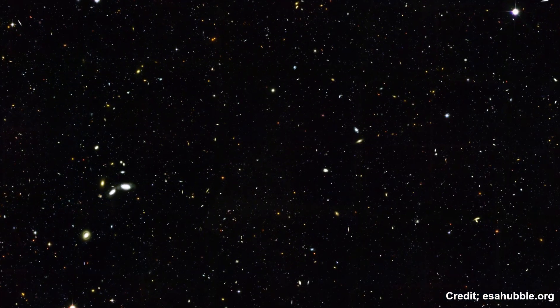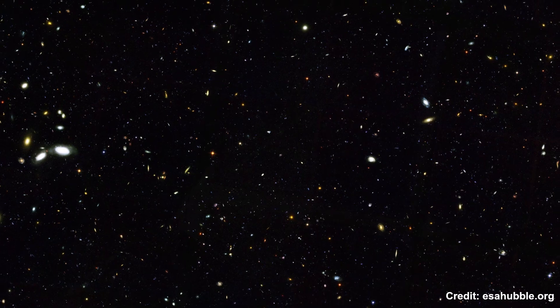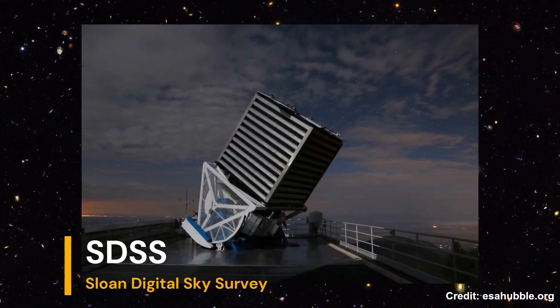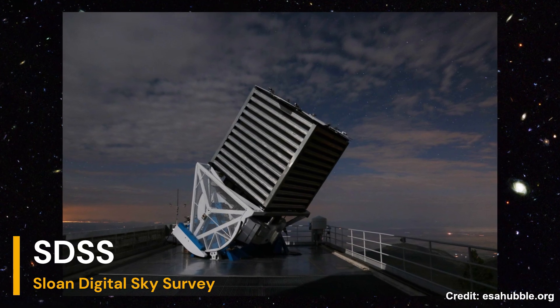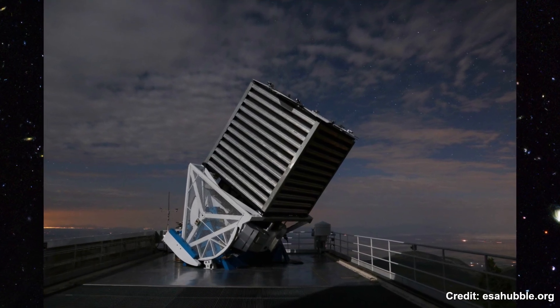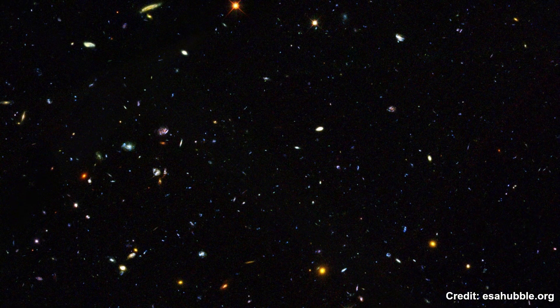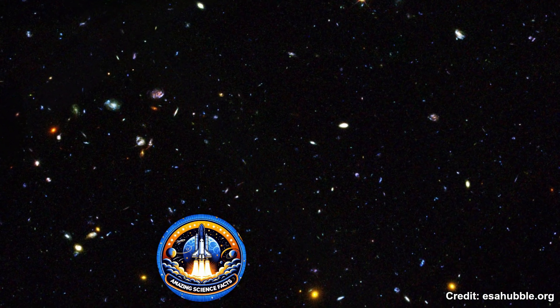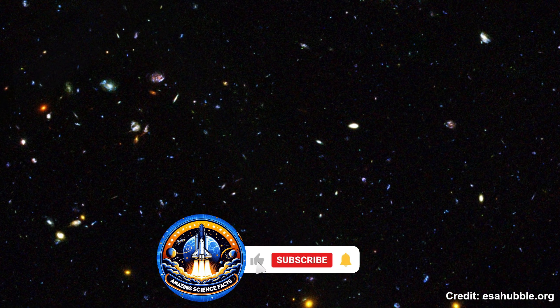Beyond just images, scientists also use simulations and models to estimate the number of galaxies. Large-scale surveys like the Sloan Digital Sky Survey map the positions of millions of galaxies. Computer models simulate the formation and evolution of galaxies, helping to predict how many more might exist beyond what we can currently observe.